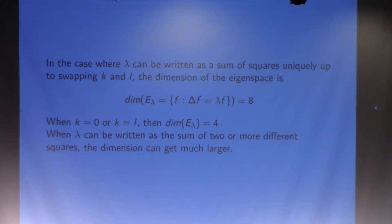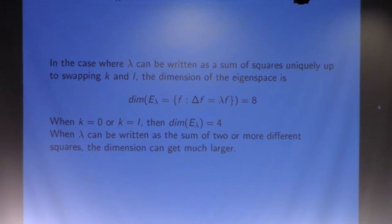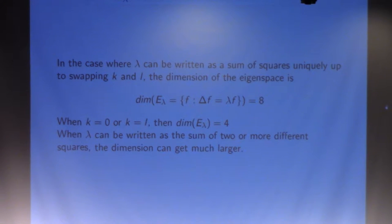Some of the actual number theoretic properties of the eigenvalue can tell you something about the eigenspace as well. In this most general case where lambda can only be written as k squared plus l squared in one way, so we have a unique sum of squares, then you have the eight-dimensional eigenspace as we had before.